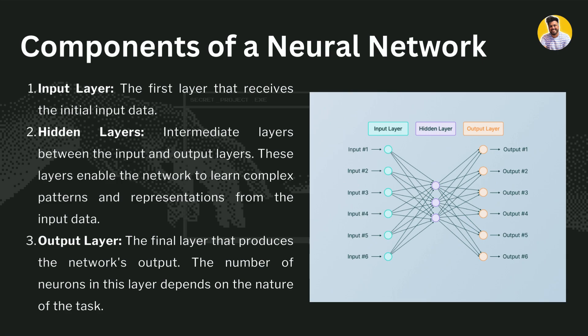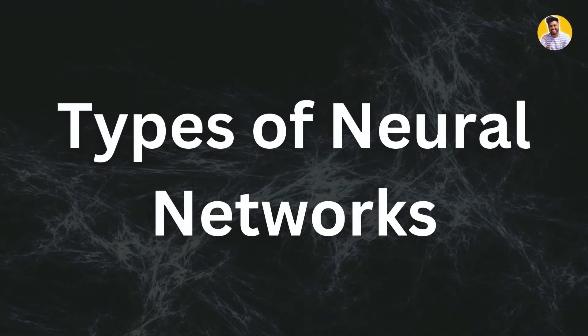The output layer produces the network output. It can contain two or more neurons based on the task. For example, in binary classification the output layer contains only two neurons, but in multi-class classification the output layer can contain more neurons.